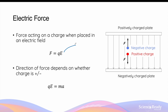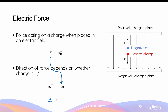For electric field between charged plates, the electric field strength is the potential difference divided by the distance between them. Using Newton's second law, by replacing force with ma — assuming the electric force is the only force acting — the acceleration experienced by the charges is simply a = QE/m.